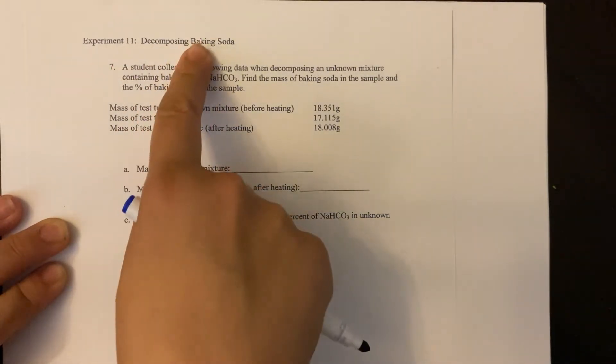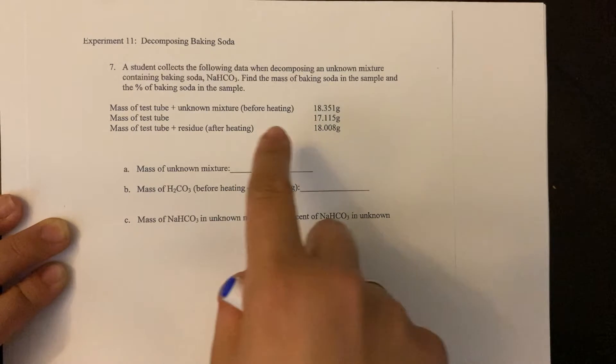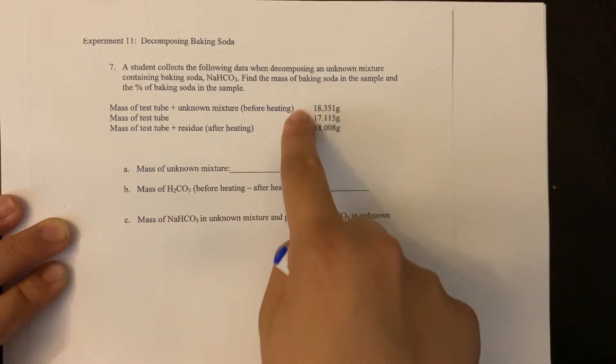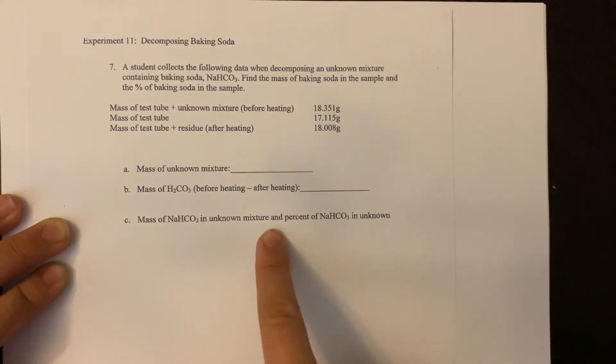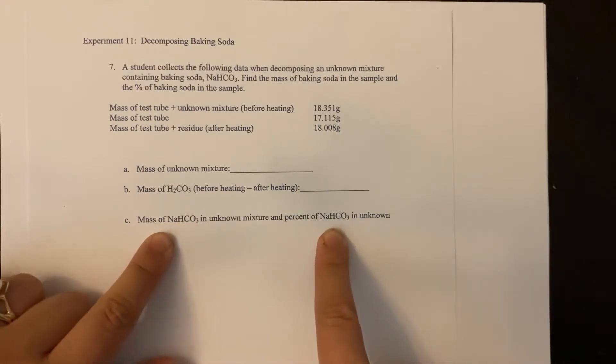So when you do this decomposing baking soda experiment, there is not only the problem of figuring out the mass of the stuff in your actual test tube, but then you have to go around and figure out your original mass of baking soda and figure out the percent of baking soda in your mixture.